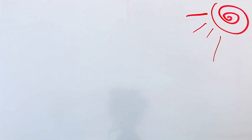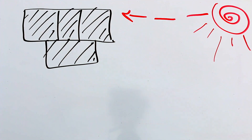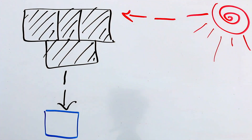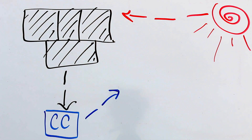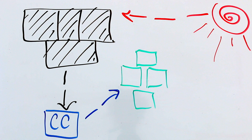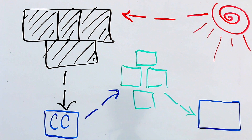Solar panels absorb energy from the sun and convert that energy into electricity. Charge controllers do exactly what the name implies — they control the charge between the solar panels and the battery bank. The battery bank is the heart of the system; that's what stores all of the electricity being produced by the solar panels.